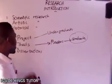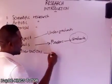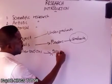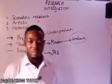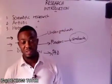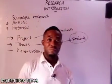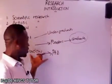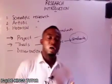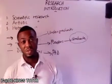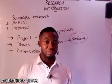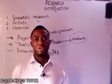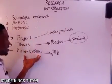The third aspect is the dissertation, which is for those in a PhD program — those enrolling for a doctorate degree in a particular discipline. In some schools it is also called a thesis, but it is more commonly known as a dissertation. Those going for a doctorate degree are mostly focused on research. So these are the three aspects: the project, thesis, and dissertation.